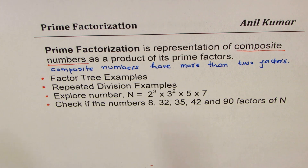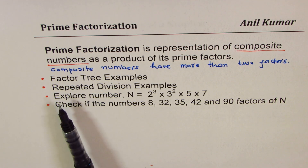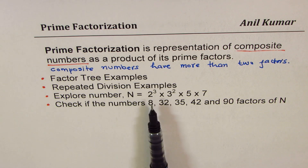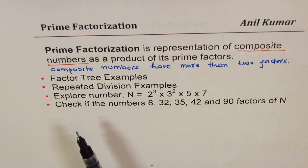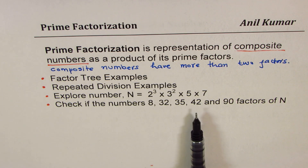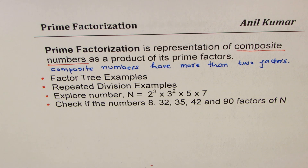We have two different processes by which you could do prime factorization. One is called factor tree — we'll take examples for that. The other method is called repeated division. We'll also explore a number written as 2 cubed times 3 squared times 5 times 7, and check if 8, 32, 25, 42, and 90 are factors of this number. You can pause the video, answer, then look at my suggestions.